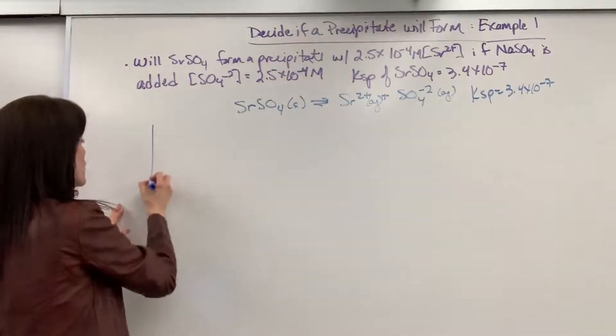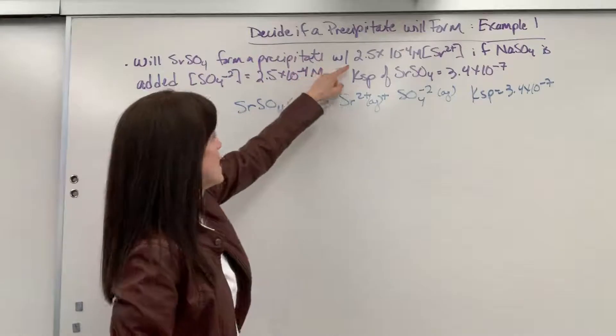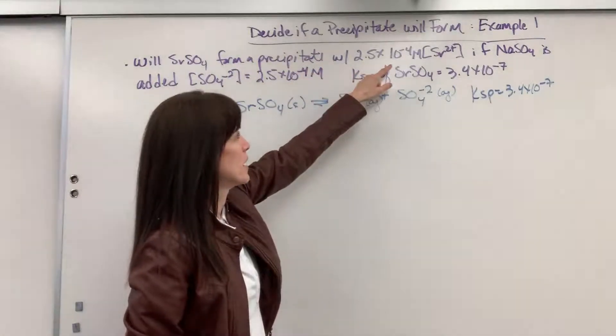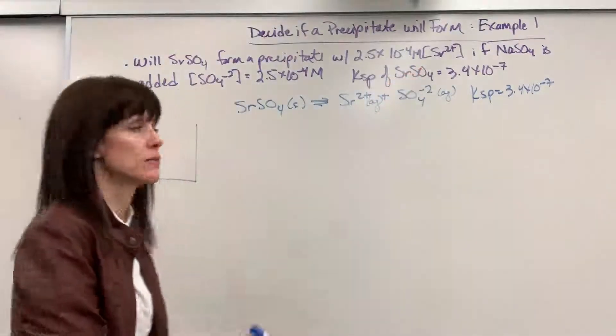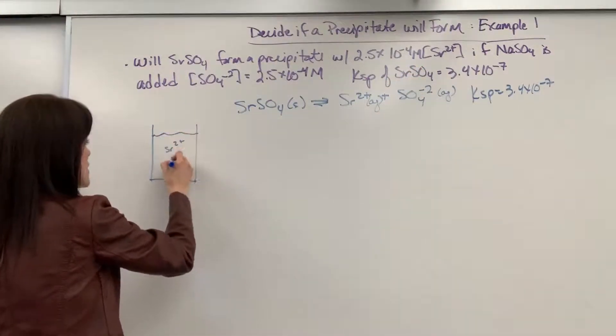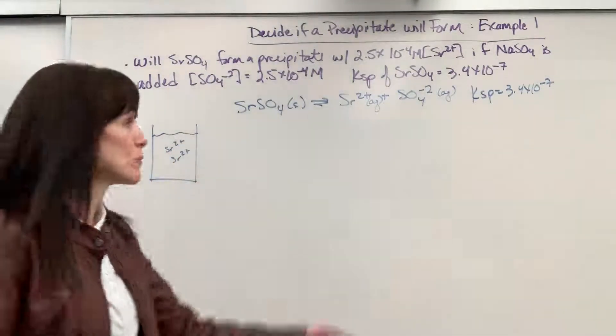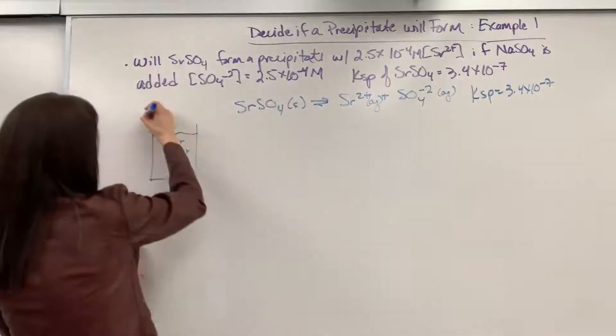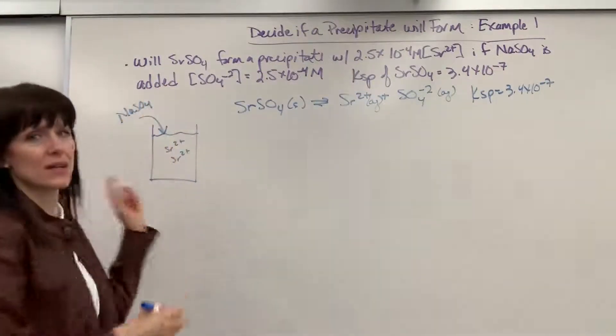Now, I'm going to draw what we begin with. It says that we have 2.5 times 10 to the minus 4 molarity, that molar concentration of the strontium ion. So, they're telling us in this solution, you've got strontium ion. Okay, so we have these strontium ions floating in that solution. And now what we're going to do is add this solid. So, we're going to add the sodium sulfate to this.